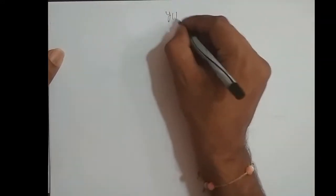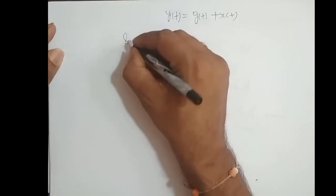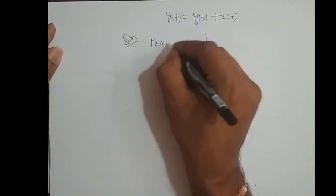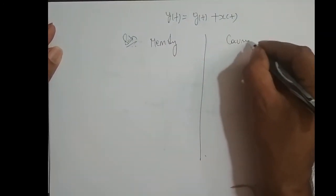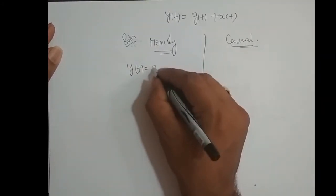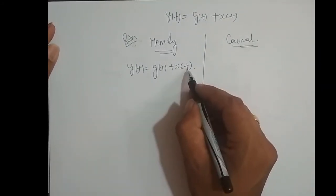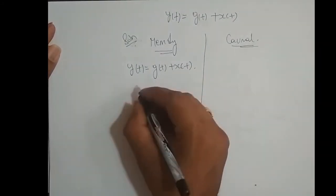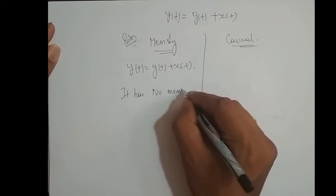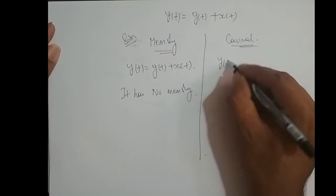Next example: y(t) = g(t) + x(t). First checking for memory: whatever value of t I put, the same t follows in both terms. Present output depends upon present input value. Therefore, it has no memory, because present output depends upon present input value.